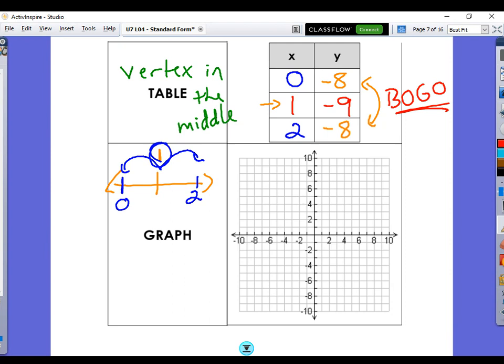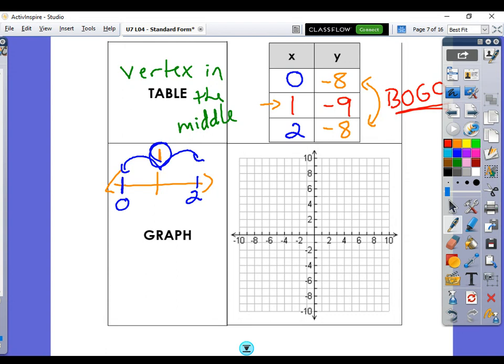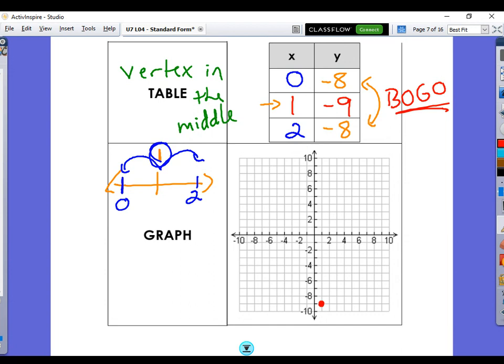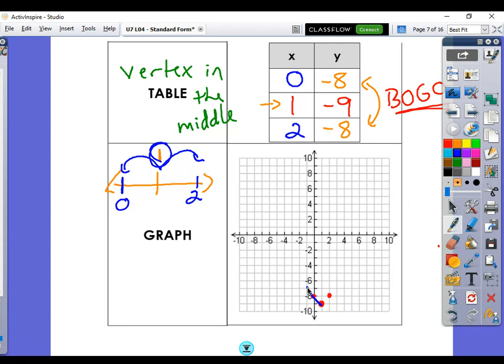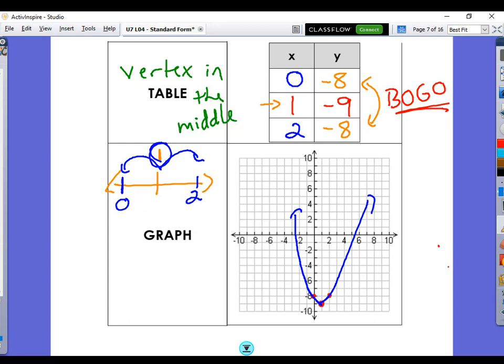So we can graph our parabola by going down here to 1, negative 9. That's 1, negative 9 right there. And then 0, negative 8. And 2, negative 8. I know it just looks like a little triangle right now, but we know what a parabola is supposed to look like. It's supposed to be a U shape. So we're just going to start at the vertex and curve upwards. Start at the vertex and curve upwards. It does not need to be a beautiful work of art. That's all we're trying to get, that visual graph itself.